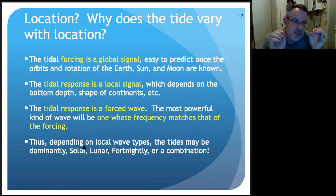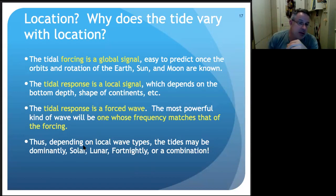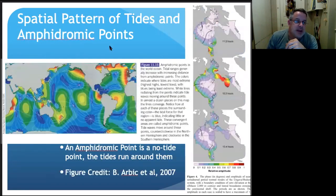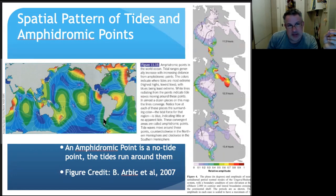The tidal response is really a forced wave. The dynamical tidal response is a forced wave whose frequency matches that of the forcing, but the amplitude, the wavelength — all of that is a function of local parameters: the local basin dimension, the local depth. So the spatial pattern of tides in the open ocean involves the concept of an amphidromic point. This is a map of the amplitudes of the tides, with spidery patterns showing the amphidromic points. The tides are going around and around these points along phase lines. An amphidromic point is a no-tide point.